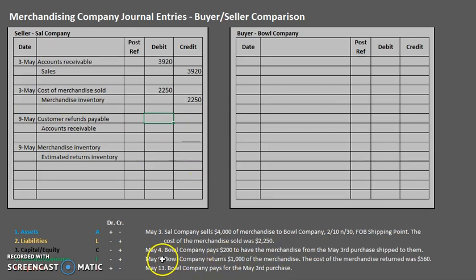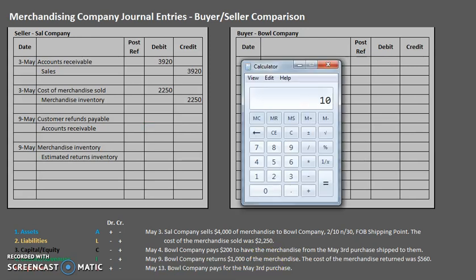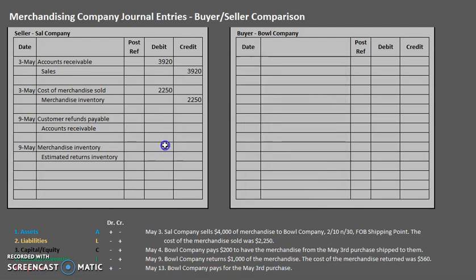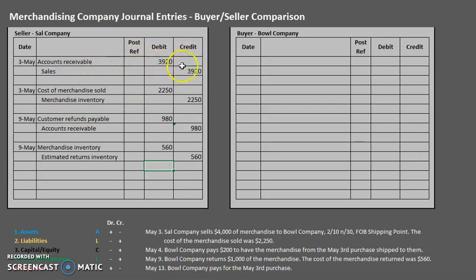Just like with Customer Refunds Payable, Estimated Returns Inventory was created through an adjusting entry. Now that the return has actually been made, we credit Estimated Returns Inventory to make it go down. For numbers: the first entry reflects the sales price, and since we're using the net method assuming the 2% discount, when Bull Company returned $1,000 of merchandise they're actually returning $980. So $980 is the debit and credit for the first entry, and $560 is used for the cost entry.